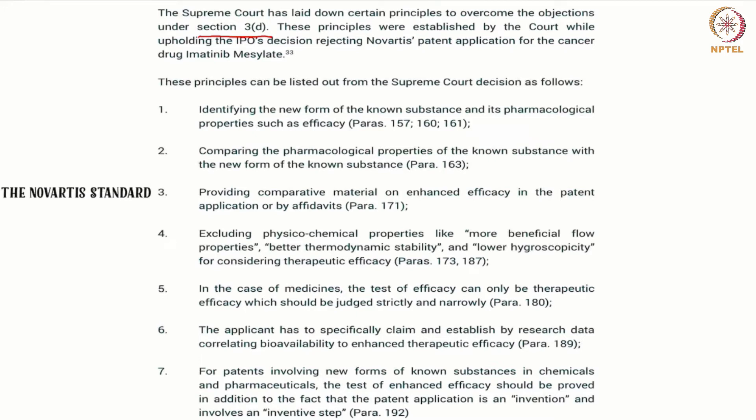The Supreme Court upheld the decision of the Patent Office rejecting the patent application for Novartis, which went to the Intellectual Property Appellate Board. The IPAB also upheld the decision of the Patent Office rejecting the patent for Novartis. This was the final culmination of the case before the Supreme Court. The principles that the court evolved can be classified in 7 broad steps.